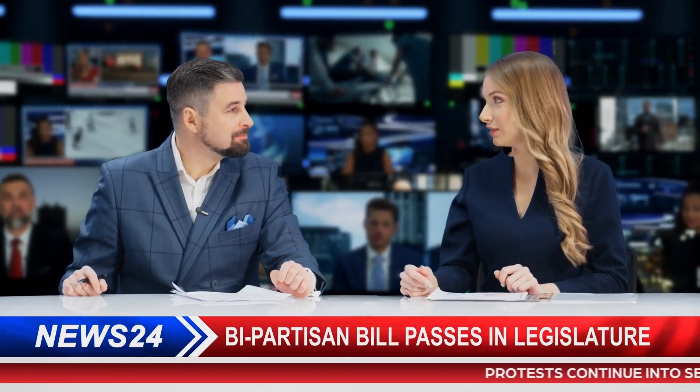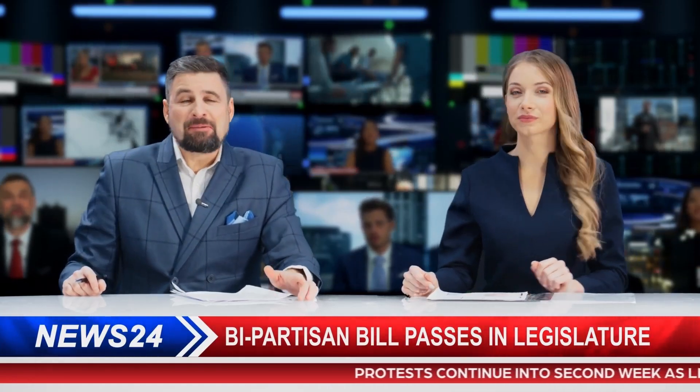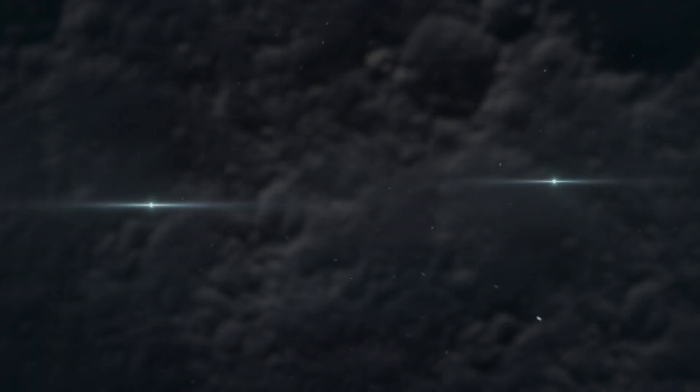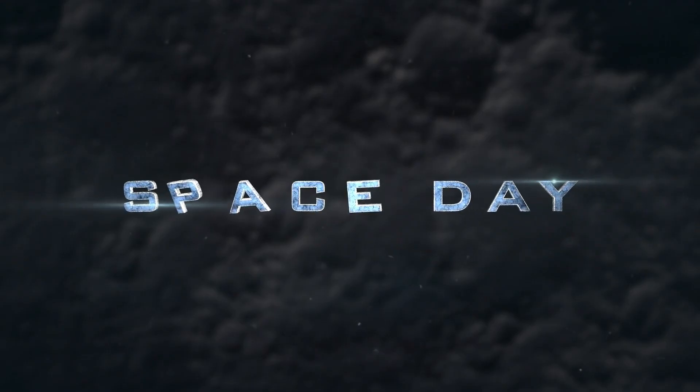For the first time in history, the International Asteroid Warning Network, a United Nations-endorsed global defense coalition, has begun tracking an object from another star system. But why now? Why this one? Because new data suggests that 3.I Atlas isn't where it's supposed to be.